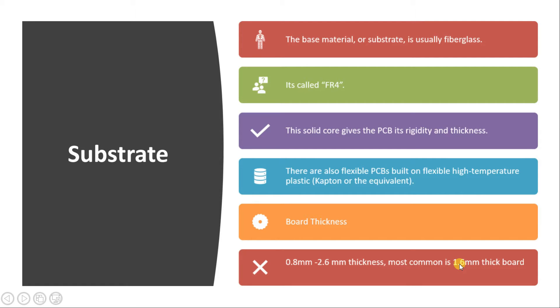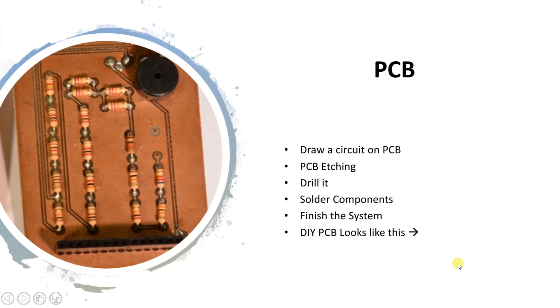Thicknesses from 0.8 mm to 2.6 mm are used, and the most common one is 1.6 mm. So if you look at an Arduino board or a particular sensor PCB, the thickness of that board is most probably 1.6 mm.